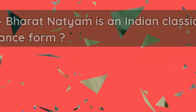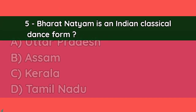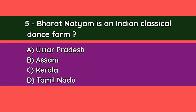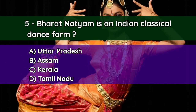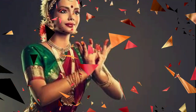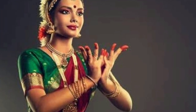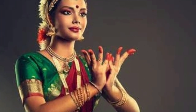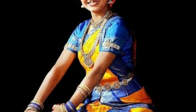Question number five: Bharatanatyam is an Indian classical dance from — A. Uttar Pradesh, B. Assam, C. Kerala, D. Tamil Nadu. And the correct answer is D — Tamil Nadu. Bharatanatyam, also previously called Sadiraattam, is a major form of Indian classical dance that is indigenous to Tamil Nadu. It is the oldest classical dance tradition in India.